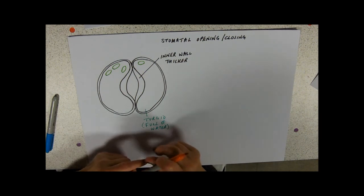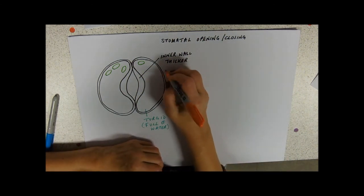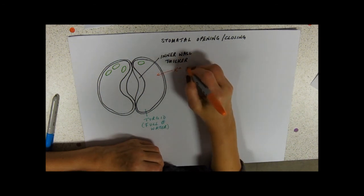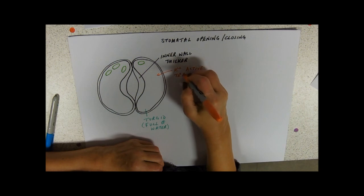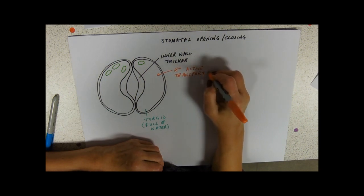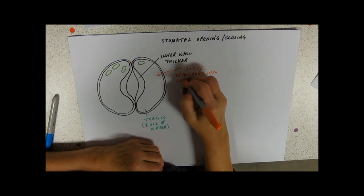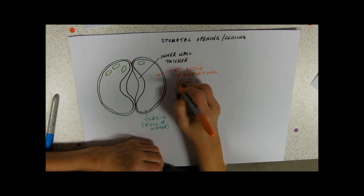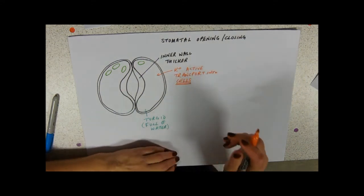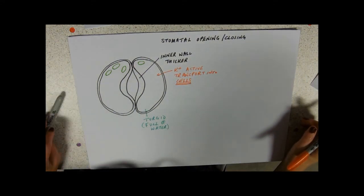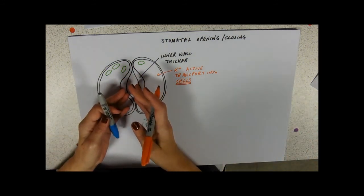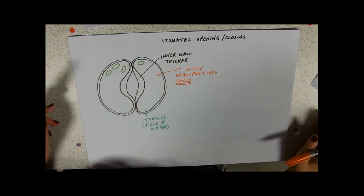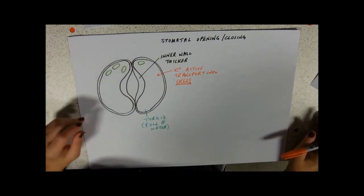So a stomatal opening and closing story starts with potassium ions being actively transported, active transport into the cells. Now that's important because a hundred times have I read in exam scripts 'potassium ions are actively transported into the stomata' - this is a hole, you can't transport anything into it. Things can pass through it like an open doorway but you can't transport anything into it.